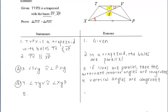So we can say that those yellow angles, TYV and XYP are congruent. And that's our second pair of congruent angles.